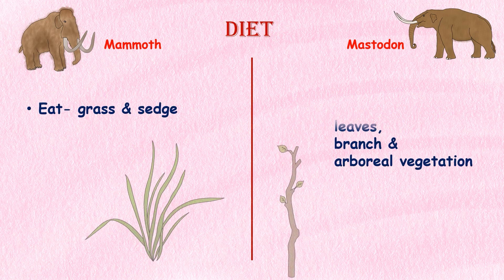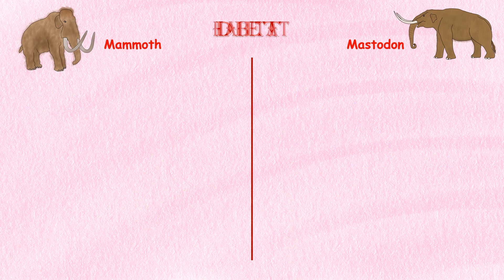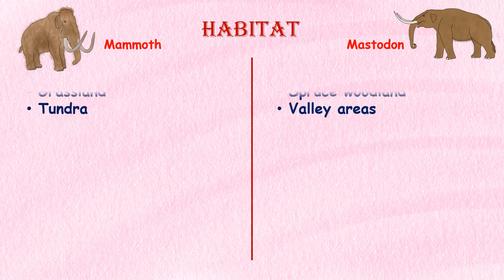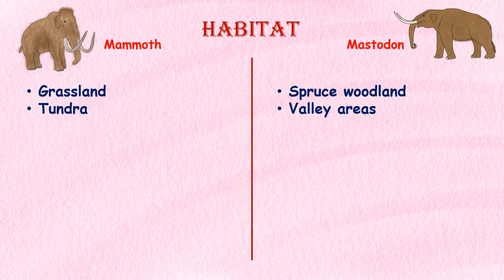Diet. Mastodons lived as browsers and subsisted on twigs, leaves, branches and other arboreal vegetation common in spruce forests. Mammoths, on the other hand, lived as grazers and consumed tough grasses and sedges. Habitat. Mammoths lived in grassland and tundra environments and primarily ate grasses and other tough, fibrous plants. Mastodons preferred to live in cold spruce woodland and valley areas that contained the majority of their food sources.